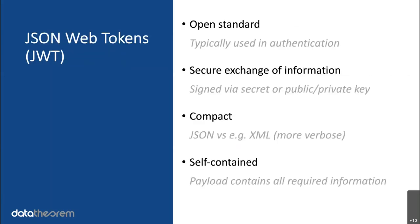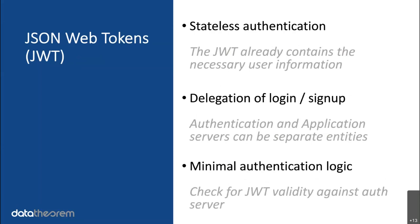So what are JSON Web Tokens, or JWT? It is a widely used open standard that provides a format for securely exchanging information and asserting claims that can be signed and encrypted using either secrets or public-private key mechanisms. Since it uses JSON, it's a lot more compact than other formats like XML, which is a lot more verbose. And it's self-contained — we can put all the information we need within its payload. When JWTs are used in authentication, they have the additional advantage of being a stateless way to authenticate a user.